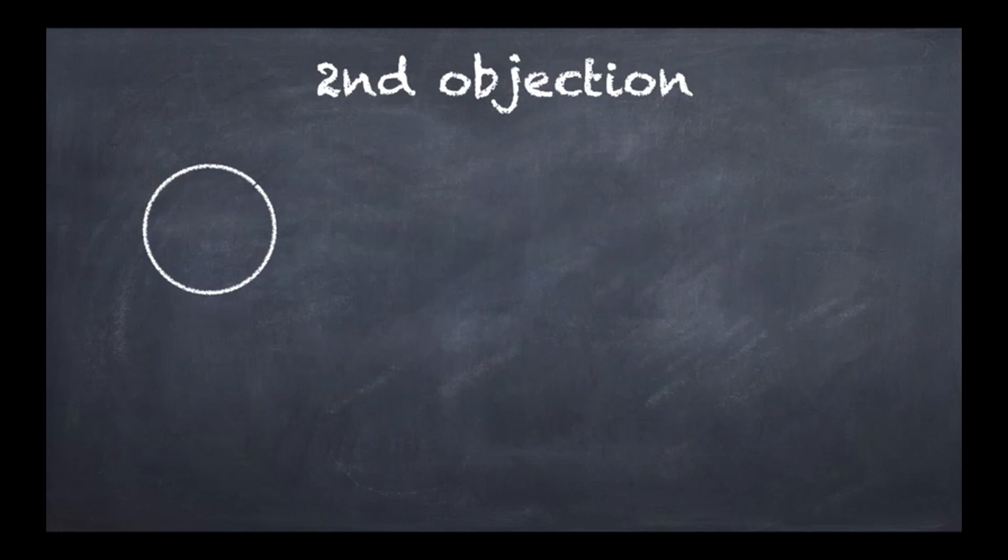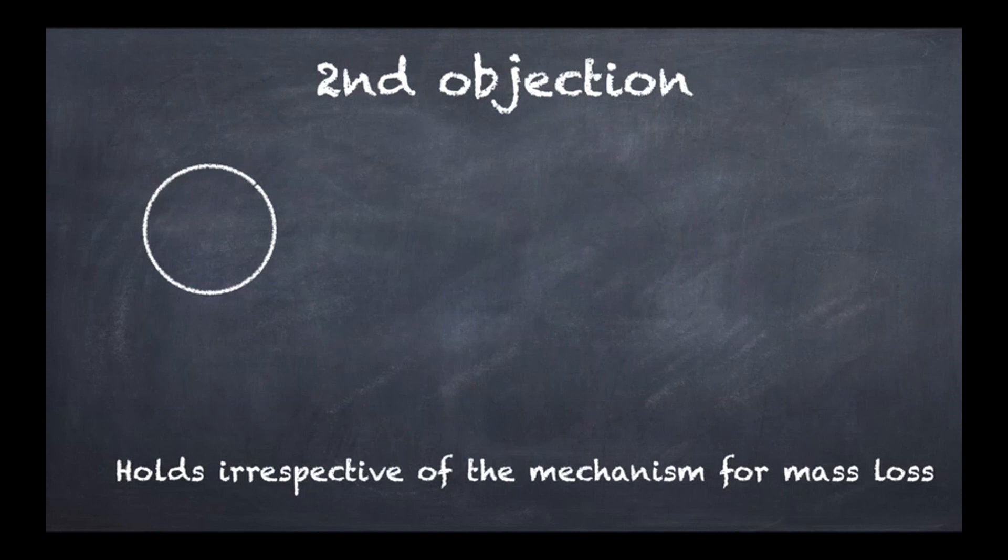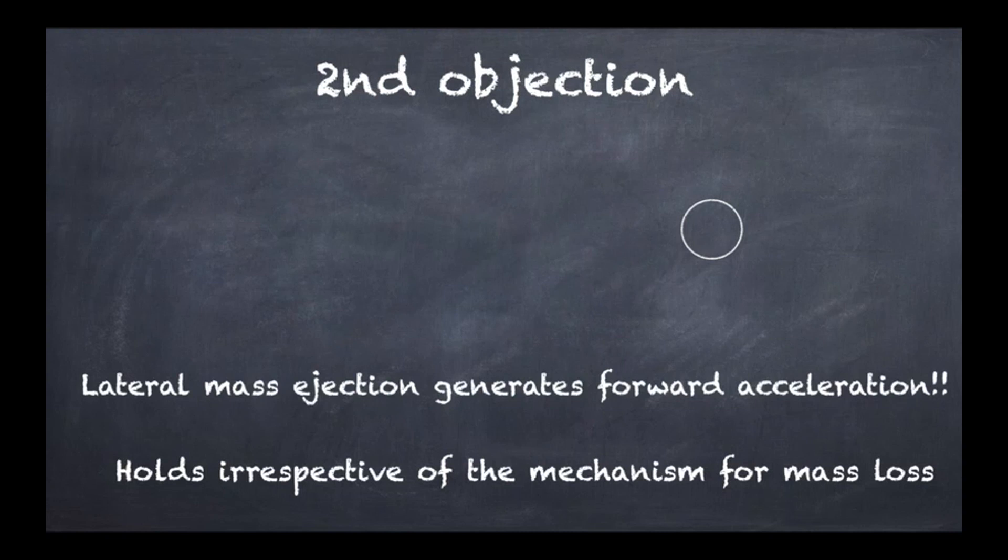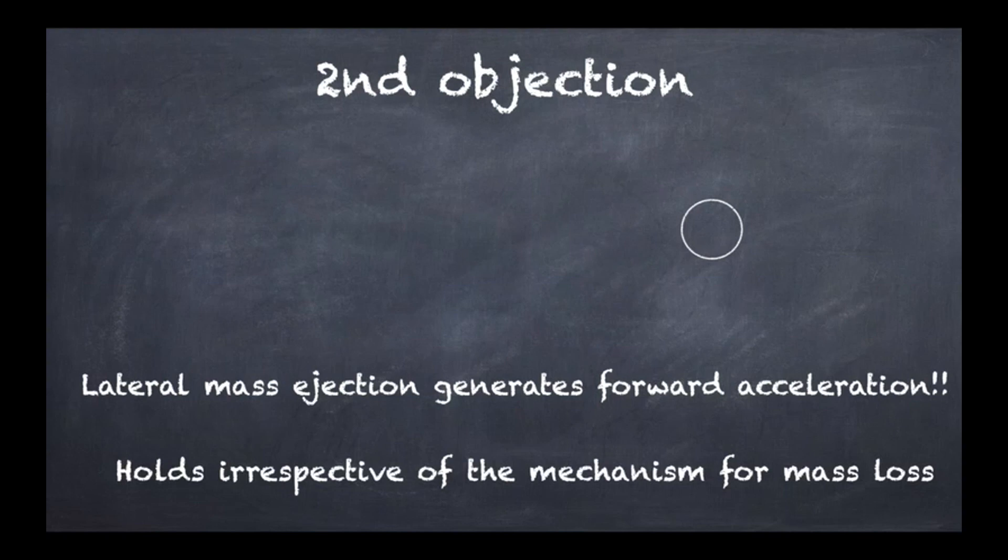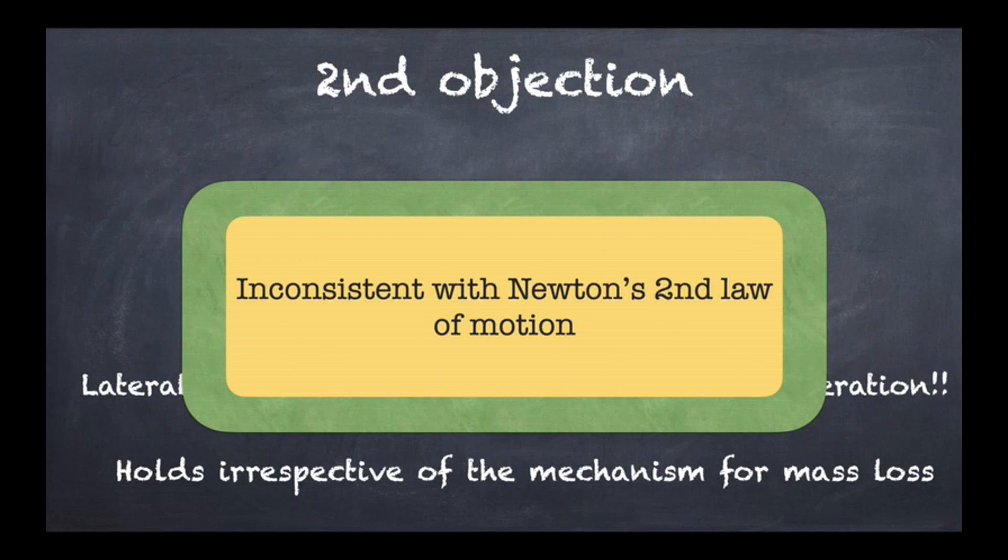A second objection that can be made spurs from the fact that the scenario we've seen, where there is a forward acceleration caused by mass loss, would hold irrespective of the mechanism for the actual mass loss. So for example, you could lose mass by simply ejecting material in the lateral direction, so perpendicular to the direction of motion. So in sum, you would have that by ejecting mass laterally, you could get a forward acceleration. The problem though is that this is in contradiction with Newton's second law of motion.